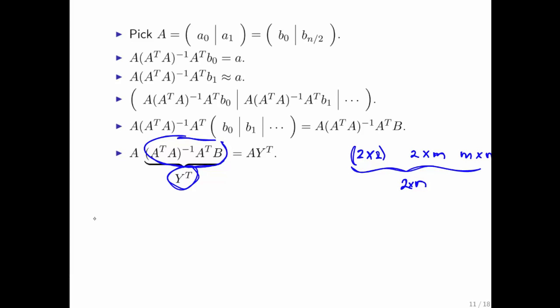So Y transpose is 2 by N. So A is two columns, and Y transpose is two rows. Or you can say A is two columns, and Y transpose is two columns transposed.